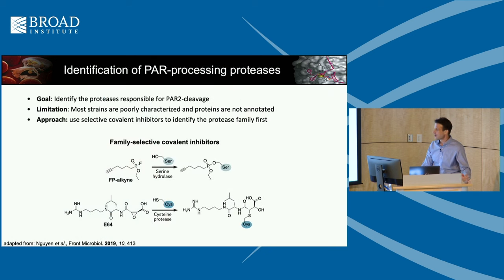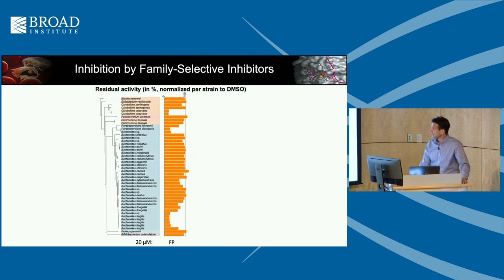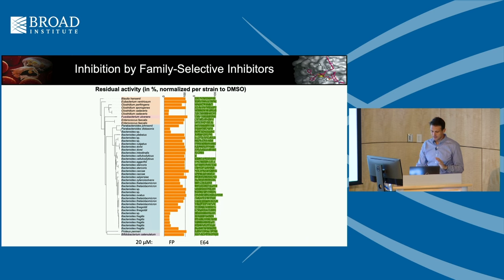It's clear that a number of different bacteria can produce PAR-processing proteases. The question is: what are these proteases? That's where covalent molecules come back in — if you have covalent modifiers you can use them to find targets. We used two molecules: the fluorophosphonate FP molecule for serine proteases, and E64 for cysteine proteases. Pre-treating the 52 hits with the FP molecule and looking for bars that go down — those producing serine proteases whose activity is inhibited — and the same with E64 for cysteine proteases.